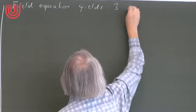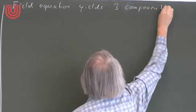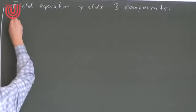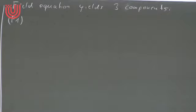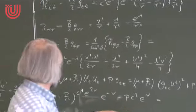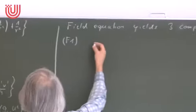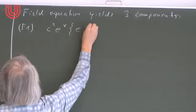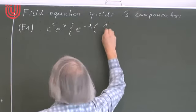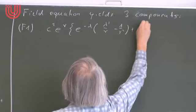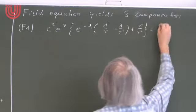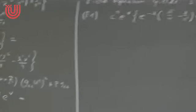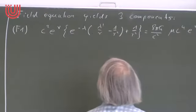We have now determined all unknown functions. The solution involves three constants: ρ (the constant density), B, and d. This is expected — we need free constants to match the interior to an exterior solution of appropriate total mass. Note also that F3 is automatically satisfied by our solution and gives no additional information. The general solution to our system of differential equations has been found.